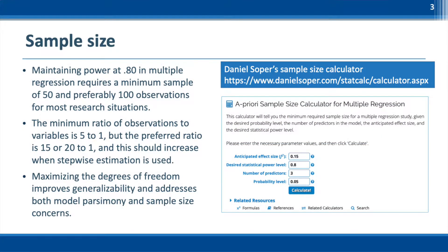Before testing the assumptions, we need to make sure the sample size is sufficient for this analysis. The required sample size for Multiple Regression is determined based on the number of independent variables, test power, and expected significance level. The details on sample size determination for this test are discussed on page 174.